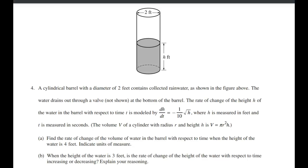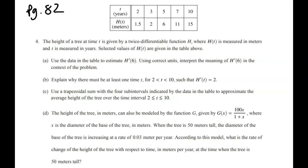Move on to our next one. On page 82, we're doing numbers 4a and 4d. Let's begin with 4a. First, given information: the height of a tree at time t is given by the twice differentiable function h, where h is measured in meters and t is measured in years. Selected values of h are given in the table above — basically, after this many years, the tree is this tall. So that's our given information.